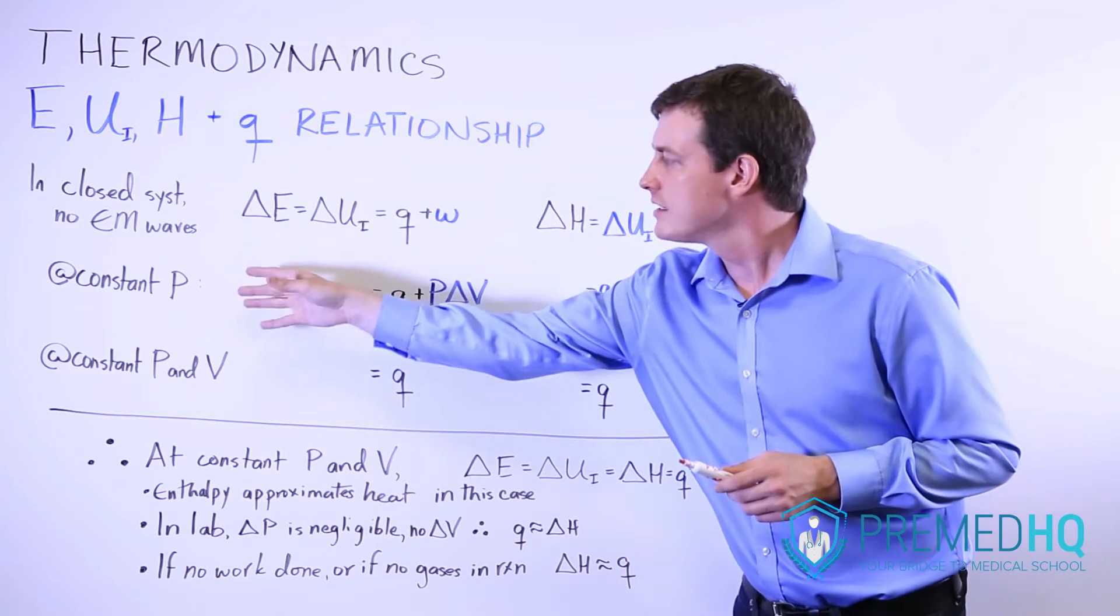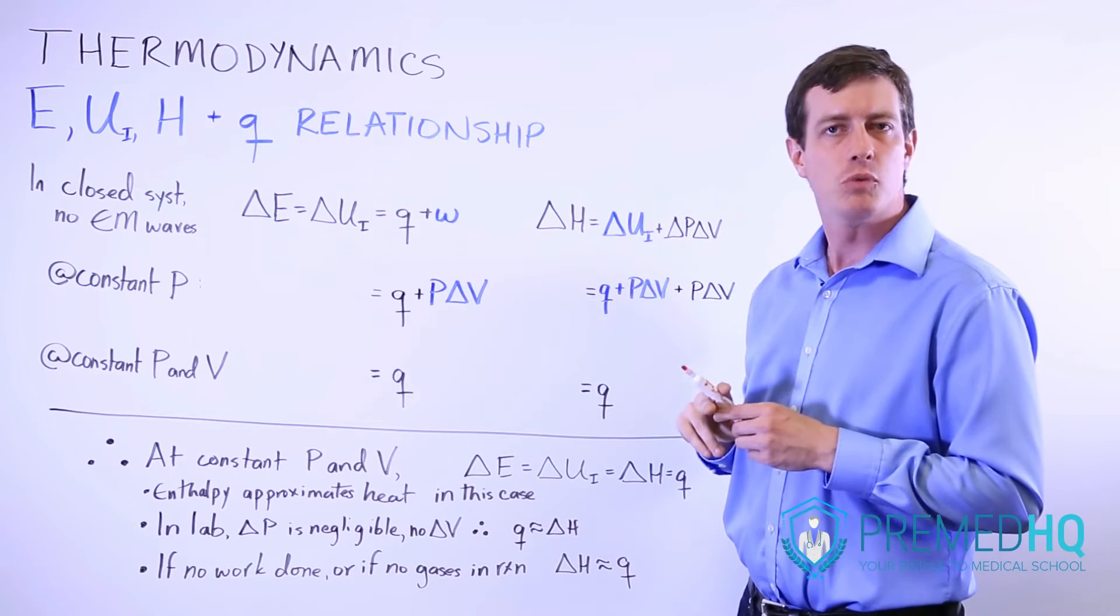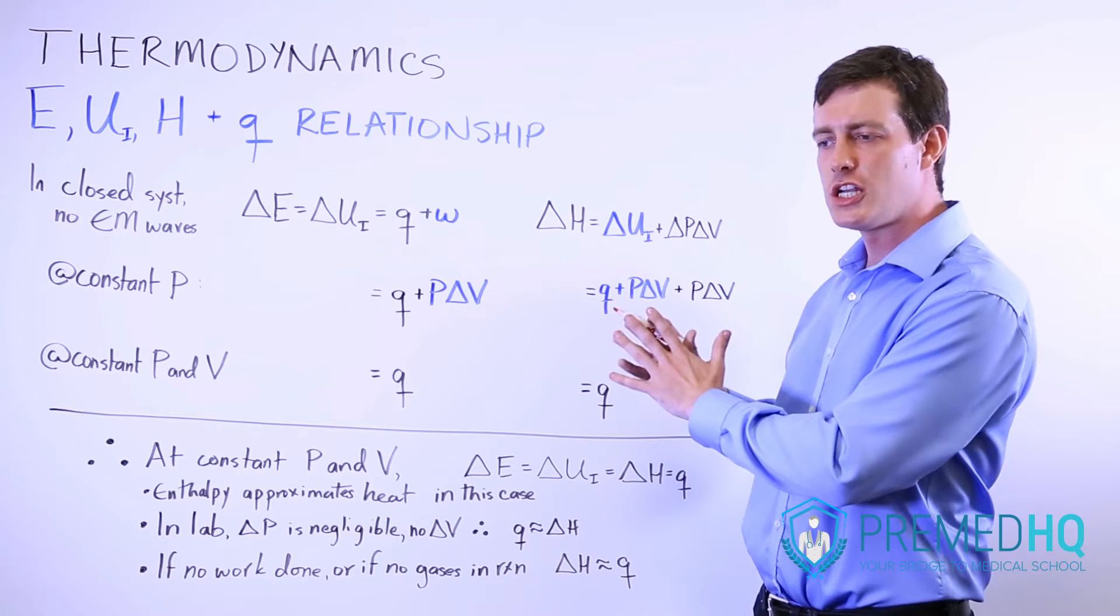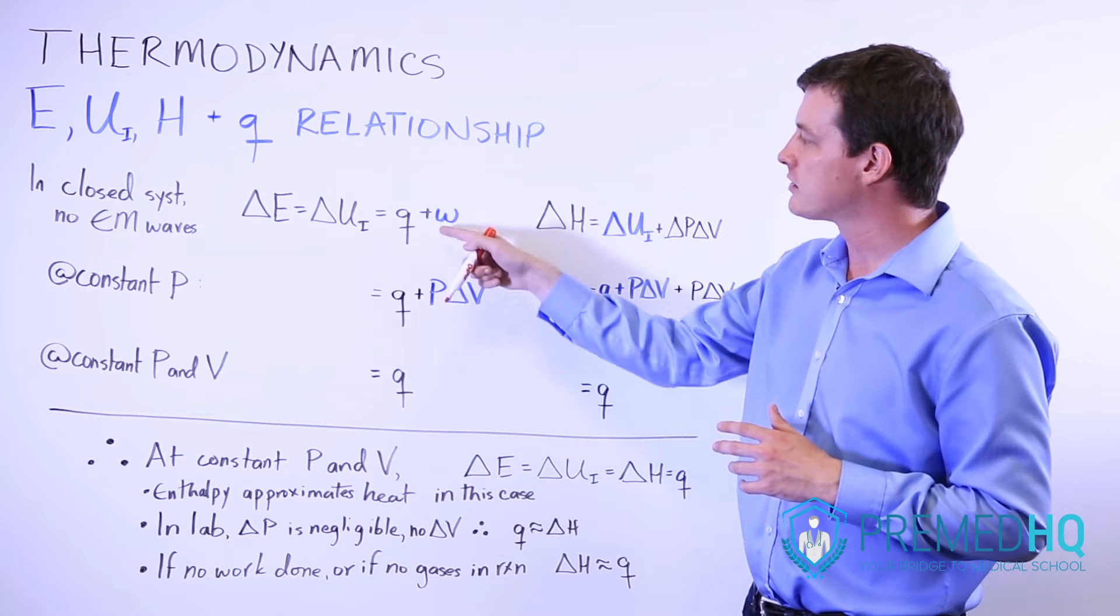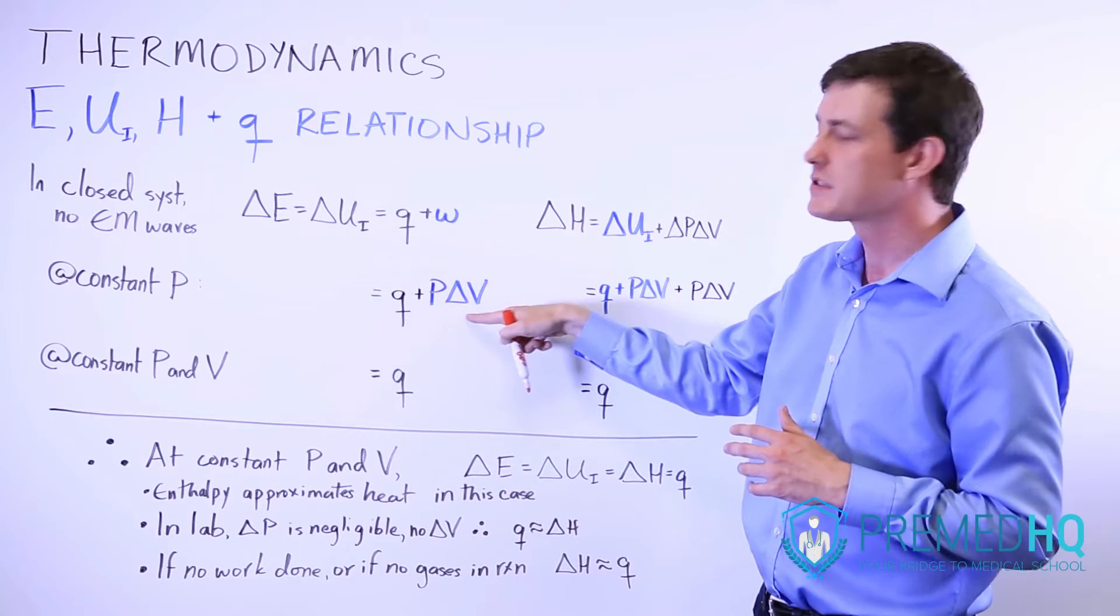At constant pressure, remember that work is PV work in a gas system. If it's the change in pressure times the change in volume, but pressure is constant, then rather than this blue work, we've essentially expanded that into P times ΔV.